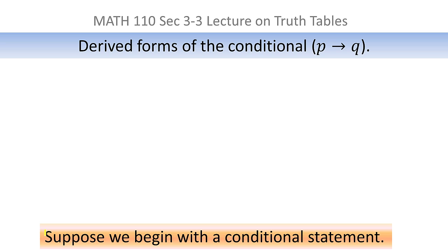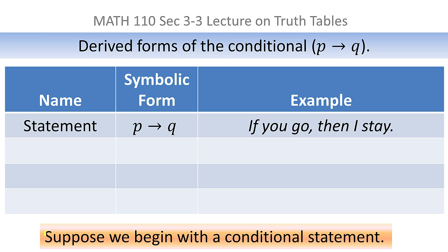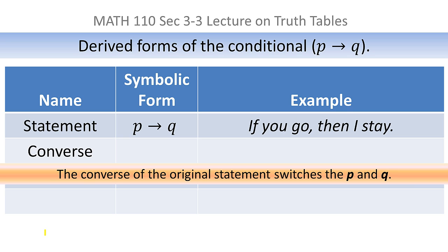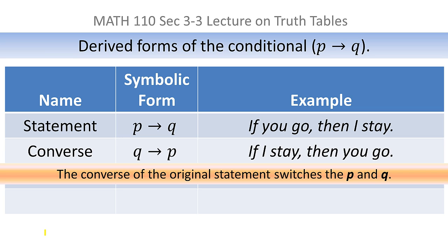Suppose we begin with a conditional statement. For example, let p implies q be 'if you go then I stay.' We can form the converse of that statement by switching p and q. So instead of p implies q, it becomes q implies p. Since q is 'I stay' and p is 'you go,' the converse would be 'if I stay then you go.'